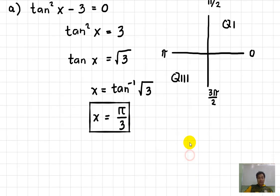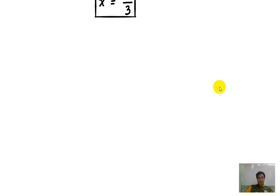Okay, let us solve the other one. Letter B, our problem or our equation is given as 2 times cosine squared x minus 1 equals 0. So since cosine is given, we have to solve for cosine x first.